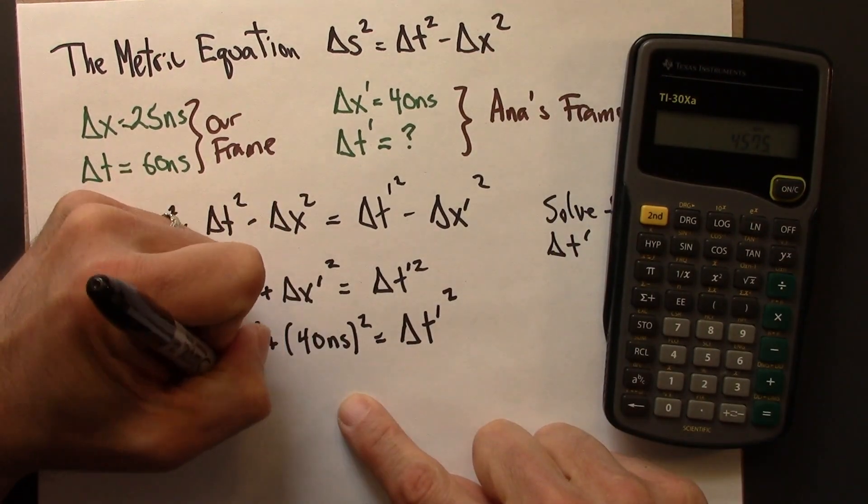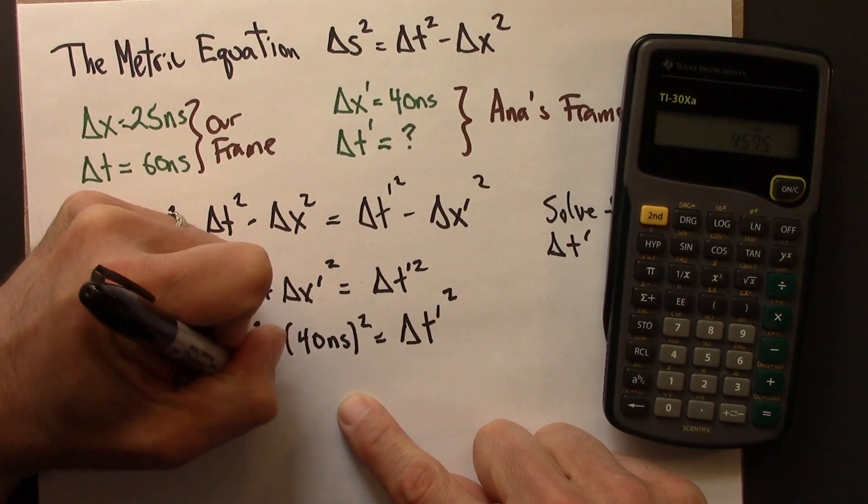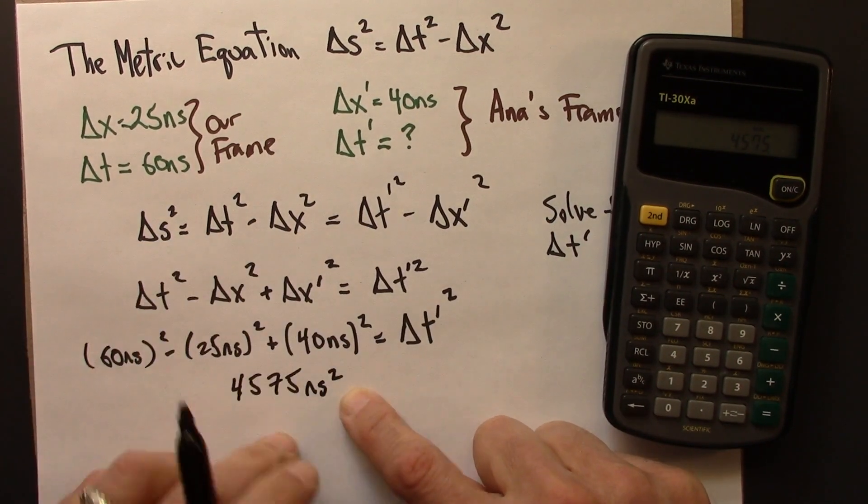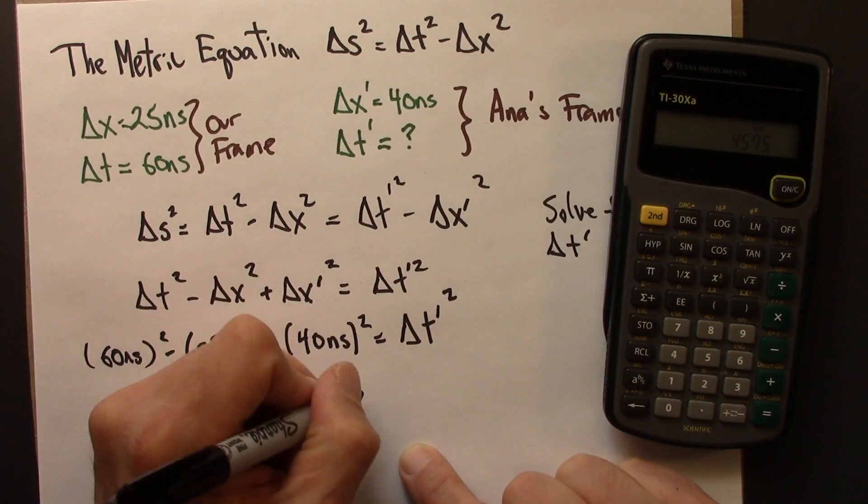So that will be 4,575 nanoseconds squared. The units get squared.